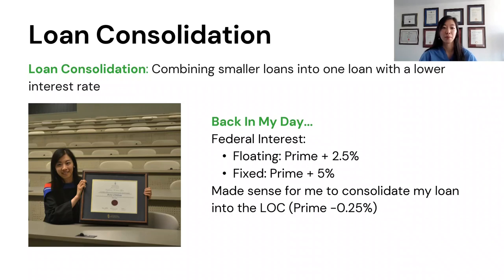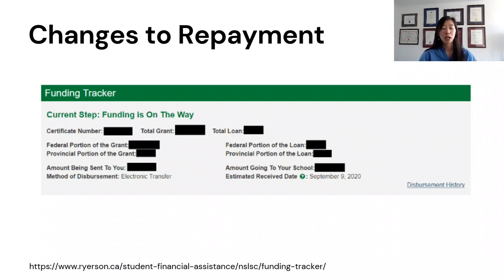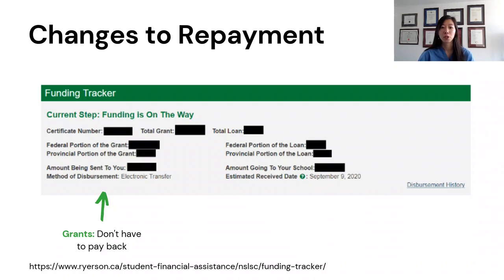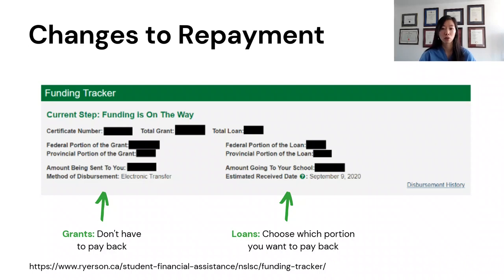That was back in 2018 when I graduated, and since then there have been a lot of changes. Now you get to choose which portion — provincial or federal — you want to pay back, whereas before payments went proportionately to both. With the federal portion currently at 0%, there's really no point paying that off just yet. So if you're going to use your line of credit to pay off a portion, it's probably better to do it with the provincial portion.